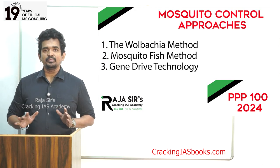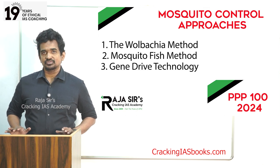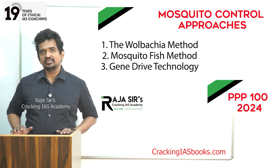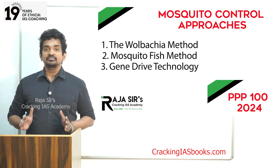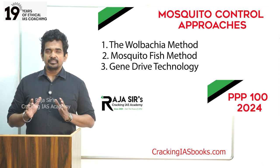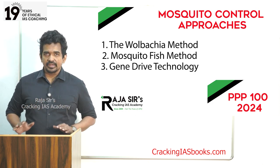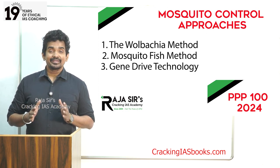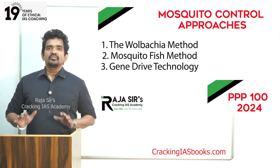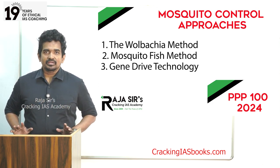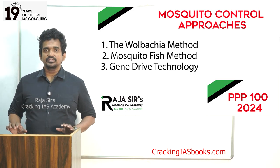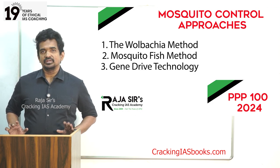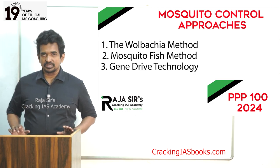I will briefly explain how to make use of this PP100 series of videos. We have divided PP100 into various segments, all based on current affairs — be it modern India, ancient India, medieval India, science and technology, geography, environment, economy, or polity. Everything is covered based on the last one year's current affairs. These videos will be short, not more than 15 to 20 minutes per video.